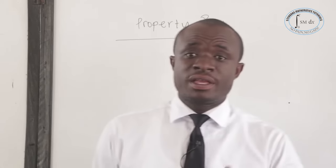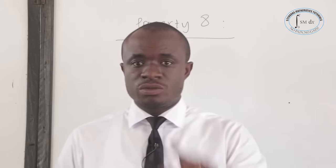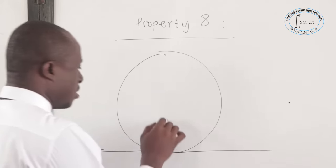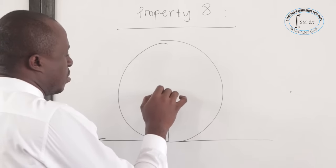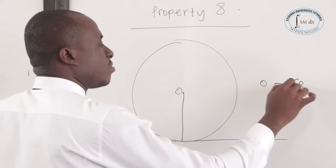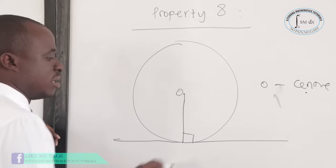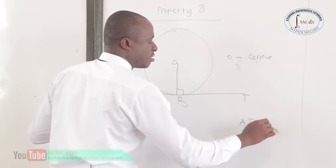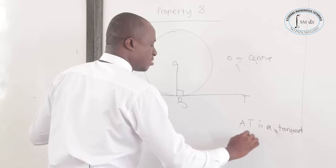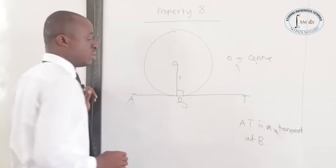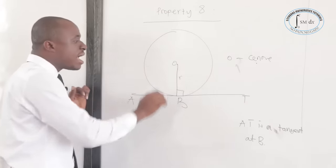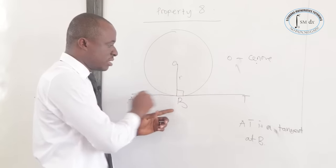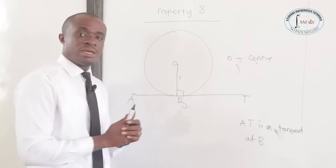Now let's look at the eighth property. The angle a tangent and the radius make is equal to 90 degrees. If we have a circle with a radius and AT is a tangent at B, with O as the center, then the angle the radius and tangent make is equal to 90 degrees. This is the radius, this is the tangent, and the angle obtained is 90 degrees.